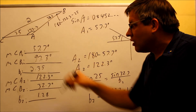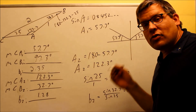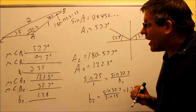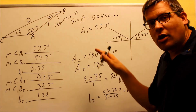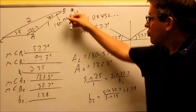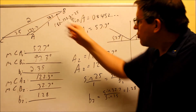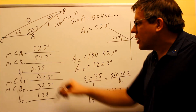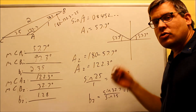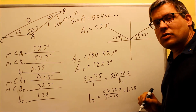So this problem actually had two different solutions. By physically drawing the triangle two different ways, we can see why there are two sets of answers.